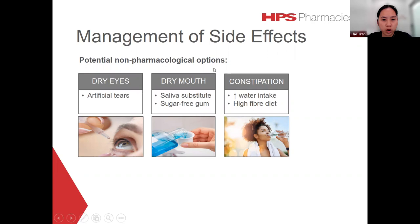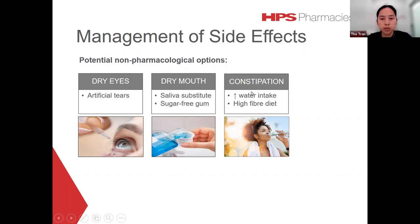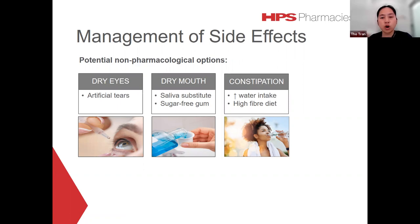Potential non-pharmacological options include: for dry eyes, use artificial tears; for dry mouth, use saliva substitutes or sugar-free gum; for constipation, recommend a high-fibre diet and increased water intake. However, care must be taken with increased fluid intake in elderly patients who may have heart failure and fluid restrictions — always consult the doctor before recommending high fluid intake.